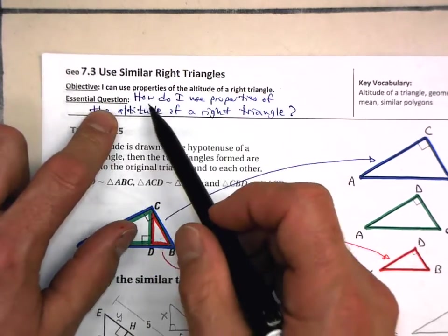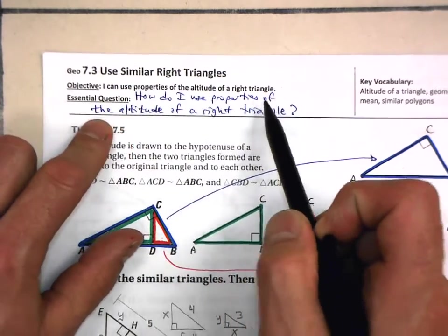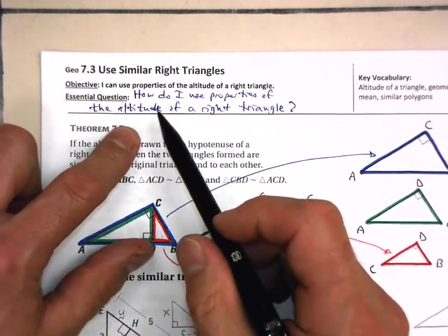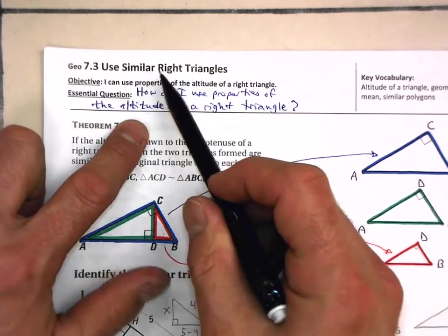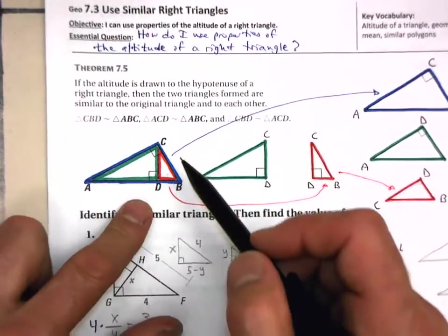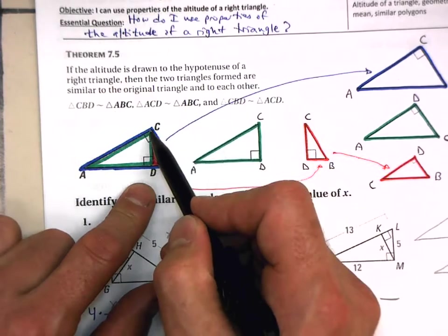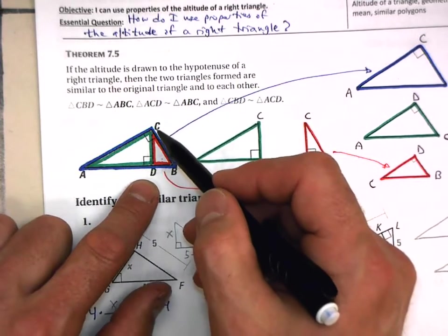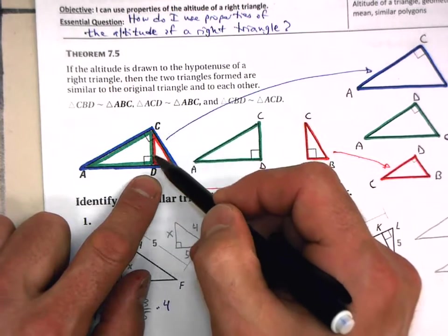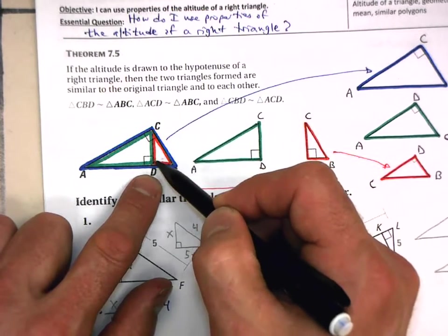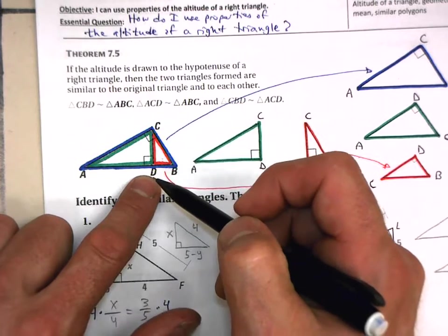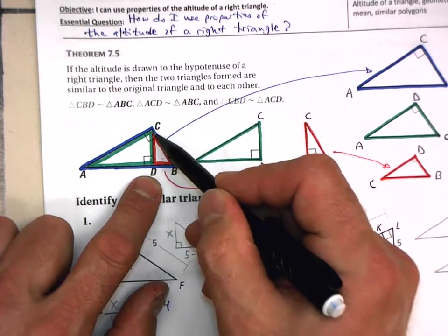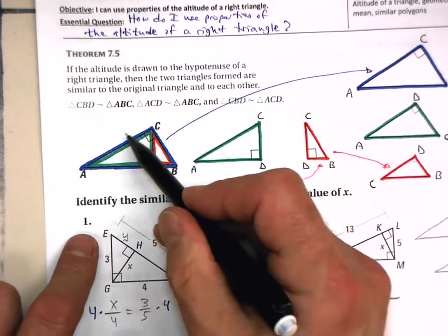Our essential question is, how do I use properties of the altitude of a right triangle? So what does the altitude have to do with similar right triangles? You will remember altitude, your little plane up here on the vertex, and the altimeter of a plane measures the distance straight down to the earth, perpendicular distance.